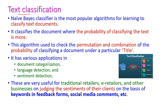The most popular application for Naive Bayes classifier is text classification. It classifies the document where the probability of classifying text is more — that is, if the document size is very high, then the Naive Bayes classifier is the best option. This algorithm uses the permutation and combination of probability to classify the document under a particular title.